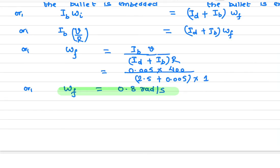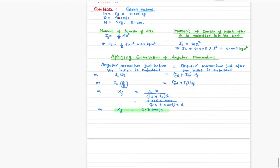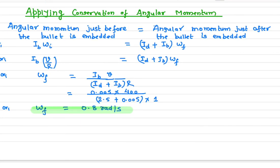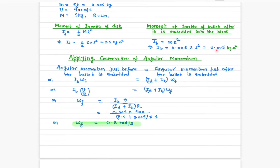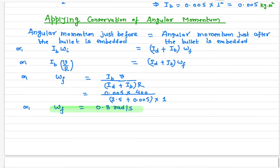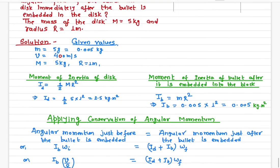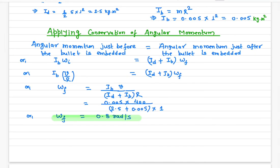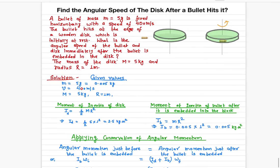The moment of inertia of the disk is 2.5 kg·m², the moment of inertia of the bullet is 0.005 kg·m², and the radius of the disk is 1 m. Doing the math: ω_f = (0.005 × 400) / (2.5 + 0.005 × 1) = 0.8 radians per second. The disk starts spinning with an angular speed of 0.8 rad/s.